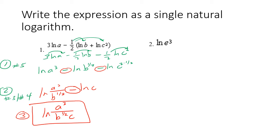This last one here is just a single expression — natural log of e to the third. I gave it so you remember property number two: these are undoing each other. Natural log and e cancel one another out using property number two, so I'm just left with three.